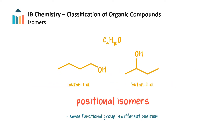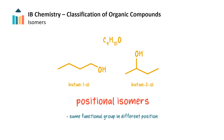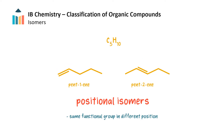If two isomers contain the same functional groups in different positions, they are positional isomers. For example, butan-2-ol is a positional isomer of butan-1-ol. Here's another example: pent-1-yne and pent-2-yne are positional isomers of each other.